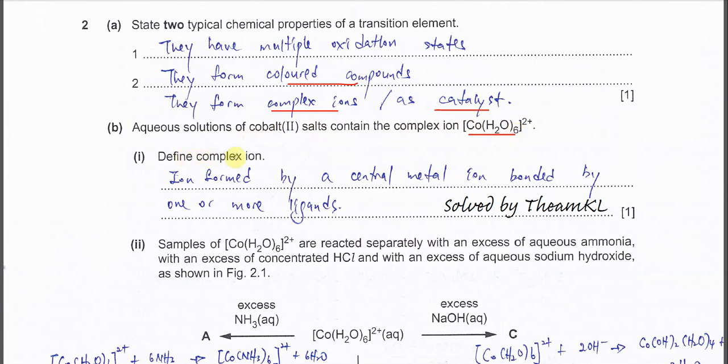Part one, define complex ion. Ion formed by a central metal ion, for example like cobalt ion, bonded by one or more ligands.